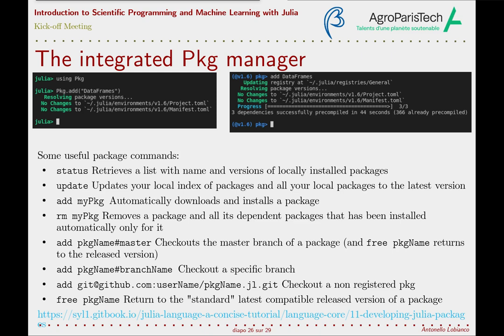Julia packages are essentially git repositories — not necessarily hosted on github.com — but they include a module plus some metadata in a Project.toml file and some other stuff like a test script, a subfolder doc from which the package documentation is built, etc. The commands shown here under the hood issue various git commands. We will not cover how to develop a package — you can refer to the link here — but only how to use existing packages.